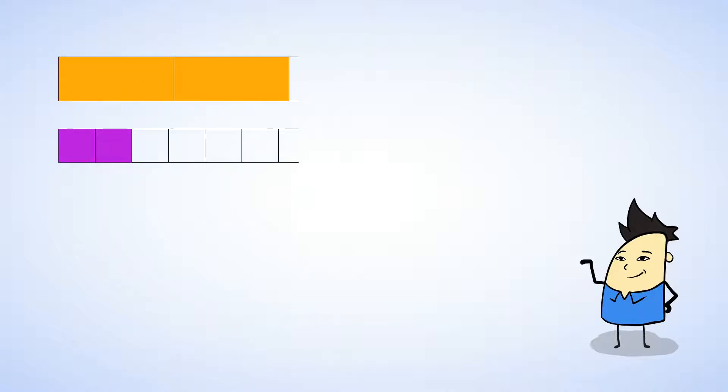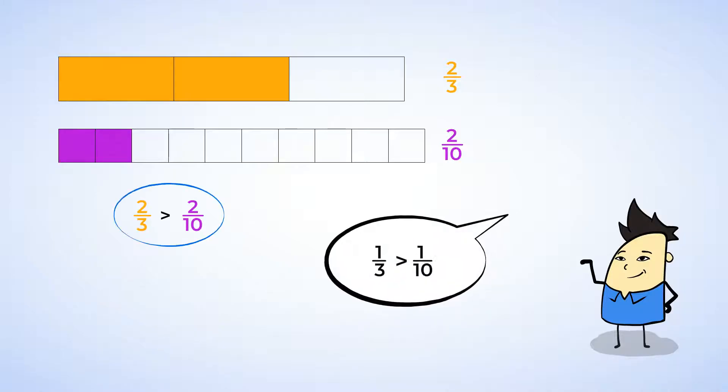Take a look. See how the two pieces of the rectangle that are divided into three parts are actually larger than the two pieces of the rectangle that's divided into ten parts? Two-thirds is greater than two-tenths, because one-third is greater than one-tenth. And so if fractions have the same numerator and different denominators, the fraction with the larger denominator will actually be smaller than the other fraction.